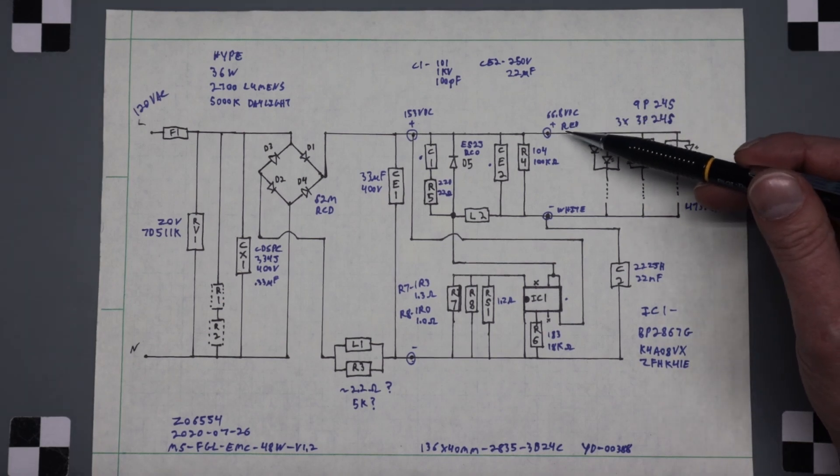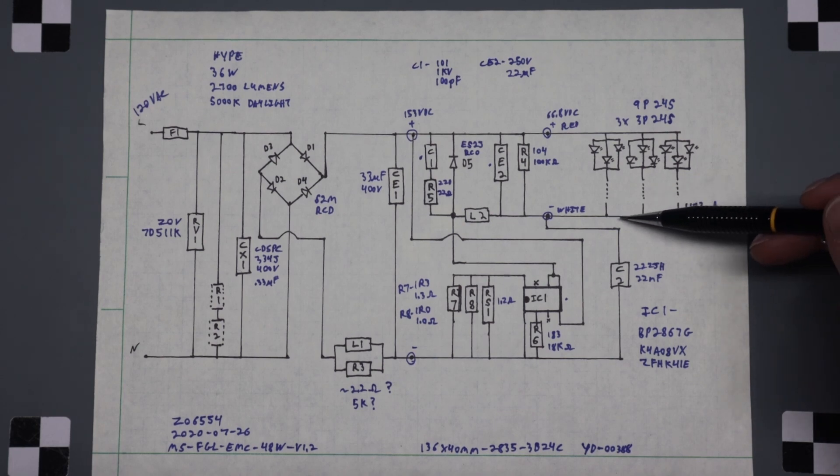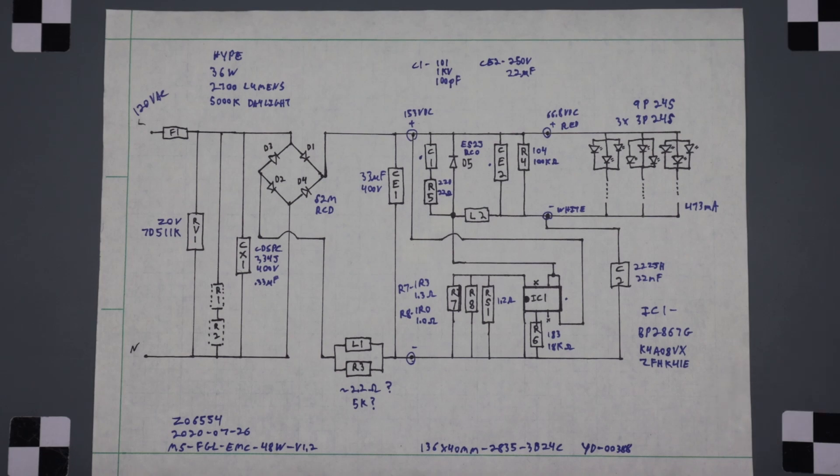The voltage across them is 66.8 and when I hooked this up it was 473 milliamps going to all of them. Parts list is in the description below. Any questions or comments, leave them in the comments below.